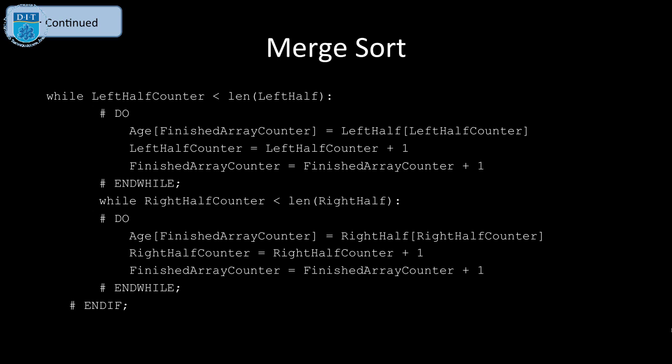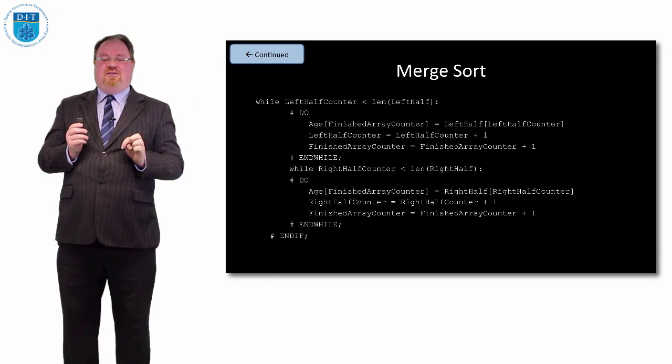Then whatever values are left, either in the left array or the right array, we write those into the main array as well, and then we're done. There's nothing strange in the Python code there that you won't see in the pseudocode.